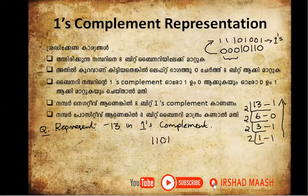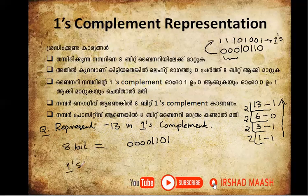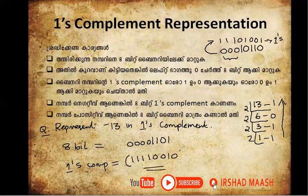The binary of 13 is 1101, which is 4 bits. We need to write it in 8-bit form, so we pad zeros on the left to get 00001101. For one's complement of negative 13, we invert all bits. That gives us the one's complement representation. This is the answer for one's complement representation — this was a negative number example.